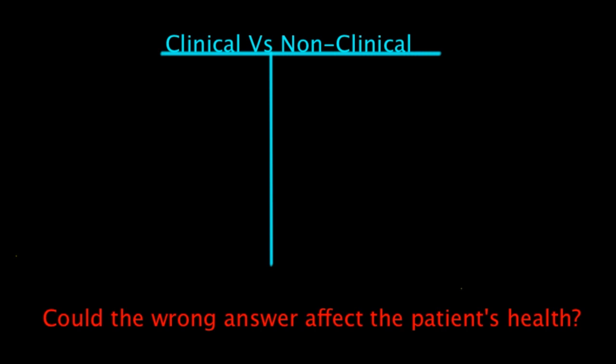In this video, we're going to talk about clinical and non-clinical information. Why is this important? As a pharmacy technician, there are certain things you are and are not allowed to discuss with the patient. Clinical information are the things that the pharmacist will have to review and verify, whereas non-clinical information are things that you're able to look at and determine yourself. A great rule of thumb is to ask yourself: could the wrong answer affect the patient's health?